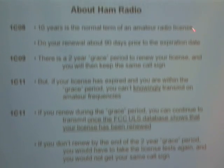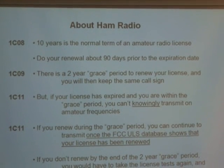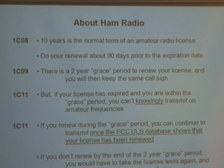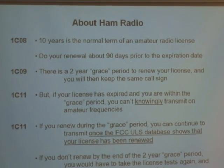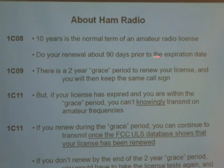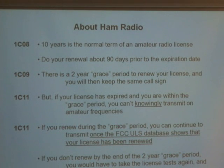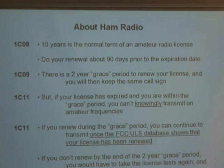Ten years is the normal term of an amateur radio license. When you get your license, it will show an expiration date exactly ten years later. You can renew your license about 90 days before it expires — you go online or go to one of the people who give the test, get the form, fill it out, check 'I'm renewing,' and send it back to the FCC. They'll send you a license back that says your license now expires ten years from now. So you can renew your license and keep it going.